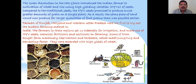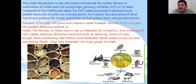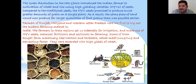Farmers made use of HYV seeds, chemical fertilizers, and pesticides, and some brought farm machinery like tractors and threshers which made plowing and harvesting faster. They were rewarded with high yields of wheat. Modern farming methods involve HYV seeds, fertilizers, pesticides, irrigation from dams, pump sets and tube wells, machinery like tractors and threshers, and fuel like diesel and petrol.